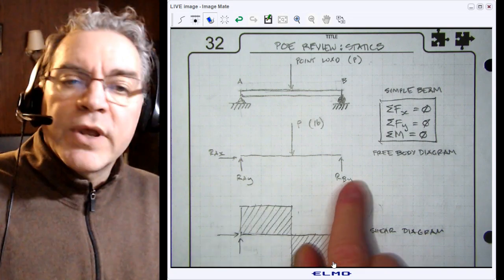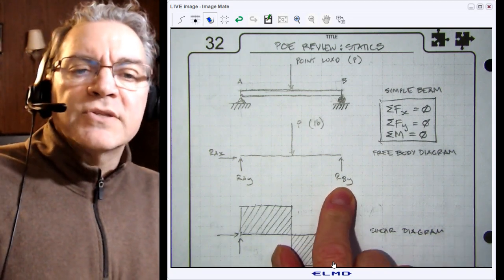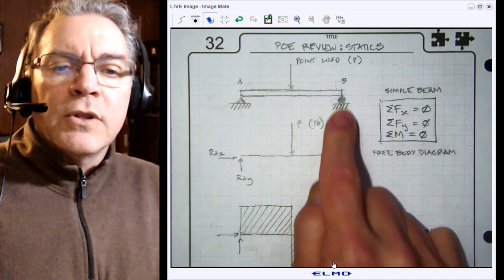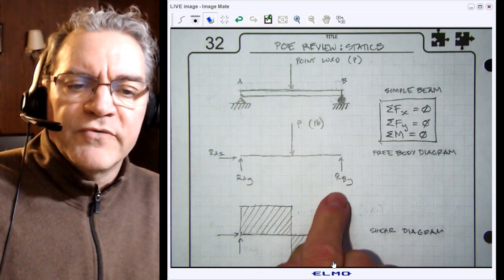At point B we just have a single reaction force because a roller cannot support loads parallel to the surface. It can only support perpendicular loads. In this case those would be vertical.